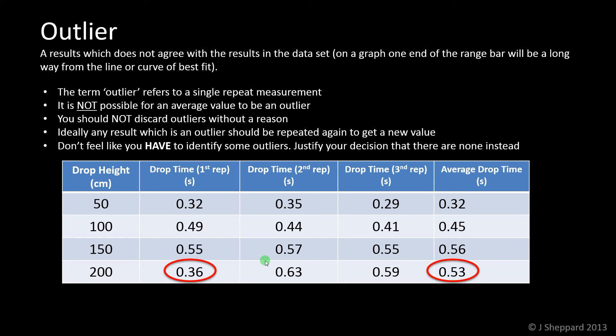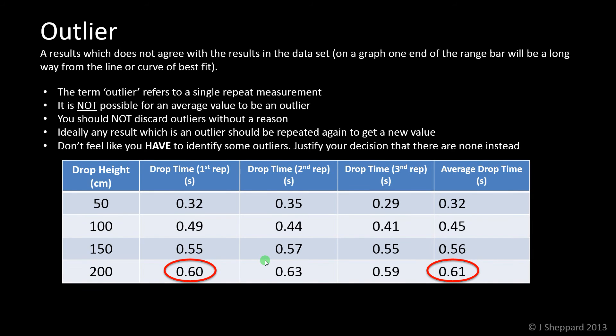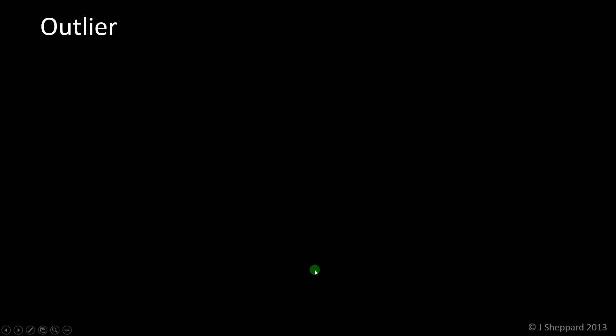When you're doing your experiment, it's important that you think about what the outliers might be as you're doing it. If you get something that looks like an outlier, was there something that didn't quite go right? If there was, you must admit it. Don't try and hide it. You must admit it and do something about it. So what we should do here is redo the result. If you've redid the result, you might get something like 0.60. That's affected the average because we've now got the average of these three things. You must make sure that you redo the results if you think you've got an outlier and write down a reason why you think it was there in the first place.